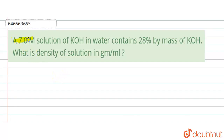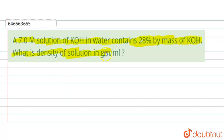The question is: a 7.0 molar solution of KOH in water contains 28 percent by mass of KOH. What is the density of the solution in grams per milliliter?